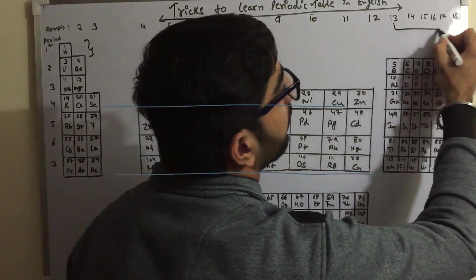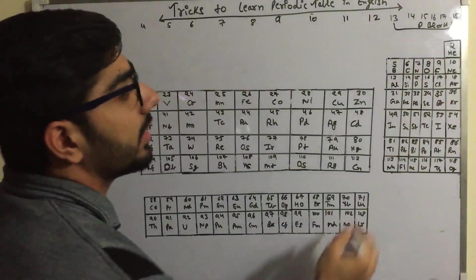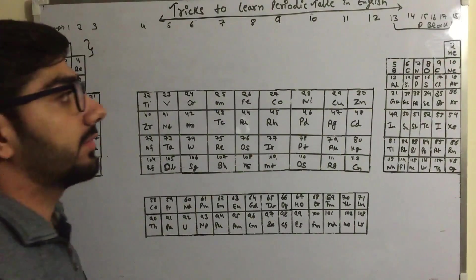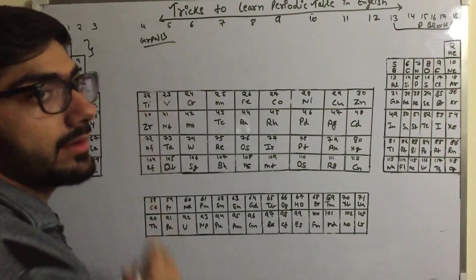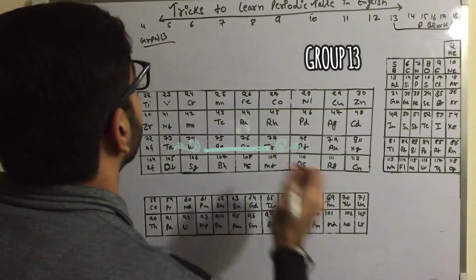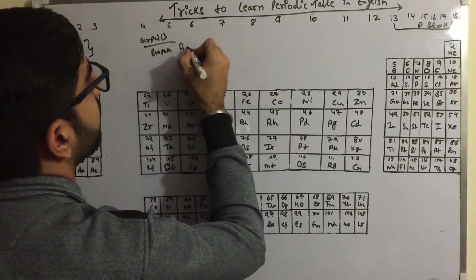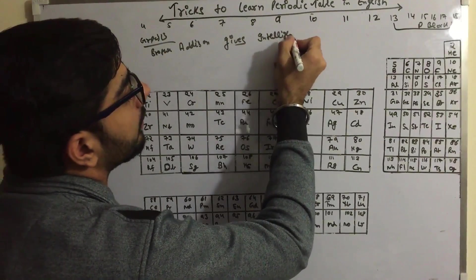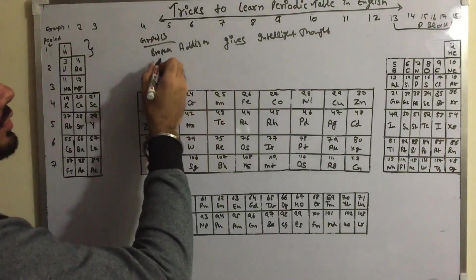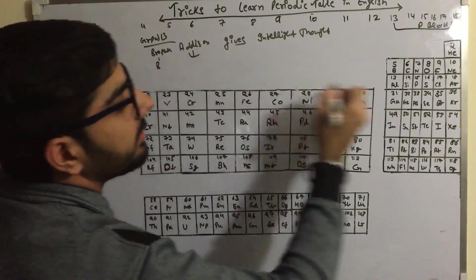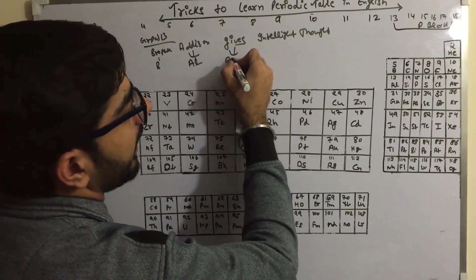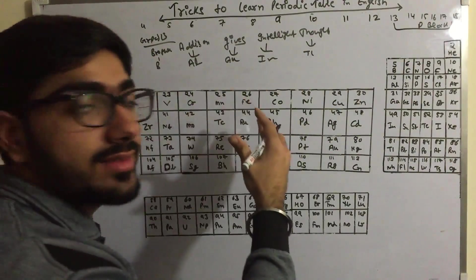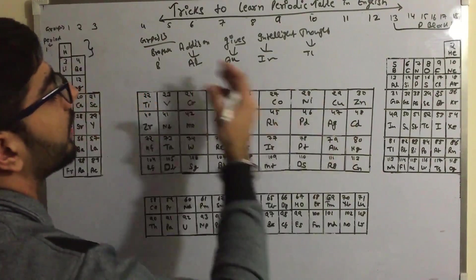Now let's study the p-block elements: Groups 13, 14, 15, 16, 17, and 18. For Group 13, the mnemonic is: 'Brother Edison gives intelligent thoughts.' 'Brother' means Boron, 'Edison' means Aluminium, 'gives' means Gallium (Ga), 'intelligent' means Indium (In), and 'thoughts' means Thallium (Tl).